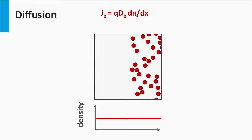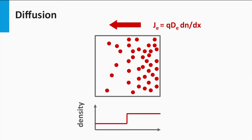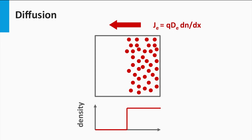Now we consider a non-uniform particle distribution. At the right, the particle density is higher than at the left — a density gradient is present going from right to left. If these particles all move randomly around, the flux of particles to the volume with lower density on the left will be higher, while the flux to the volume with higher density on the right will be smaller. There will be a net movement of particles until the density is uniformly distributed. Once the density is uniform and no gradient exists, there is no net movement of particles due to diffusion.